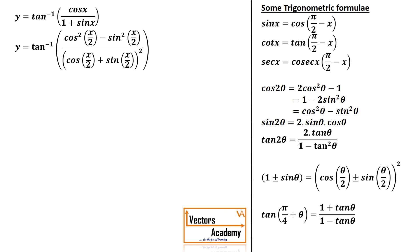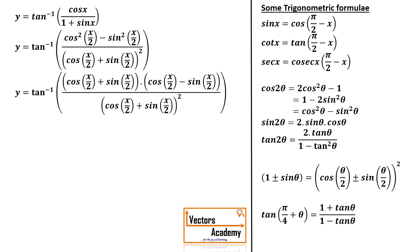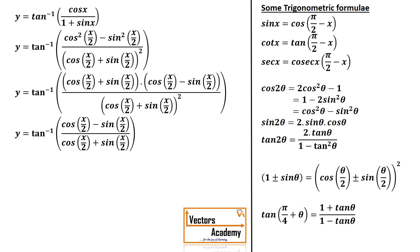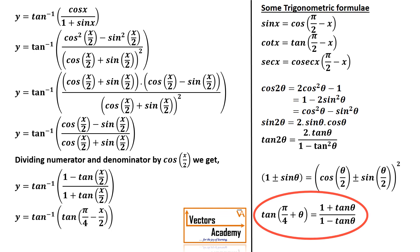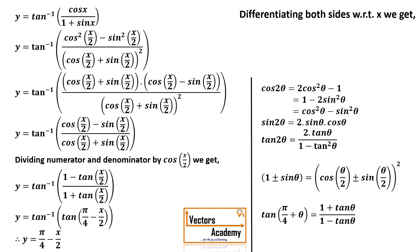Using the formula a² minus b² equals (a+b)(a−b), the numerator becomes (cos(x/2) + sin(x/2)) into (cos(x/2) − sin(x/2)). The denominator has (cos(x/2) + sin(x/2)), so that term cancels. Dividing numerator and denominator by cos(x/2), I get tan inverse of (1 minus tan(x/2)) upon (1 plus tan(x/2)). This matches the formula tan(π/4 − θ), giving tan inverse of tan(π/4 − x/2). Tan and tan inverse cancel, and differentiating — since π/4 is a constant — the answer is minus 1/2.